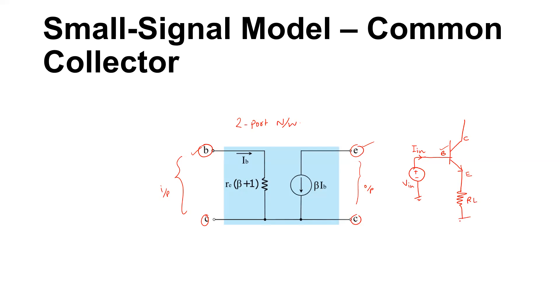From the emitter I want to take the output across the load, so I will connect the load resistance right here and here I am checking the output. Then collector is connected to the ground.